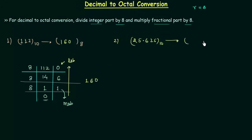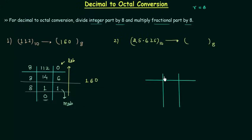In the second example the decimal number is 25.625. We want the octal equivalent of this number. If you remember the last presentation, this was the example for decimal to binary conversion — I'm using the same decimal number for decimal to octal conversion. We will divide the integer part by 8 and we will have quotient equal to 3, since 8 times 3 gives us 24.